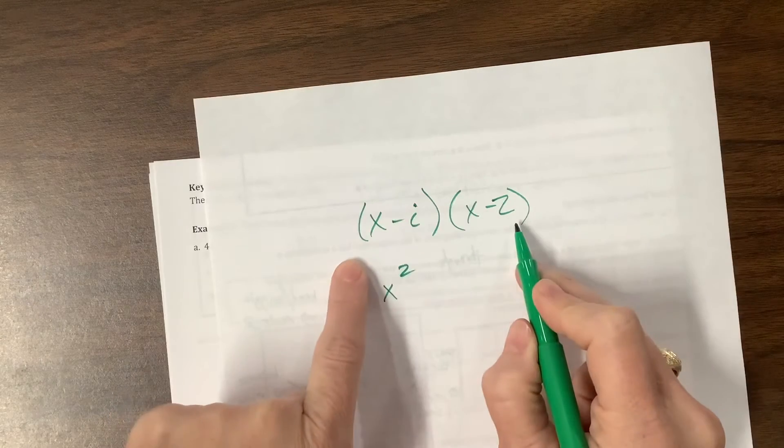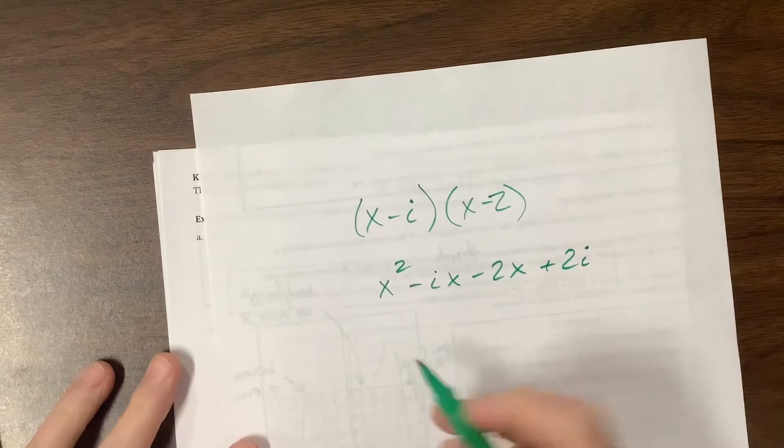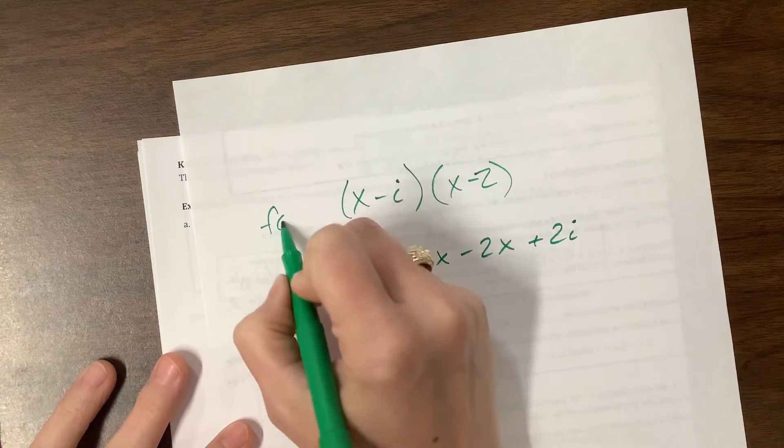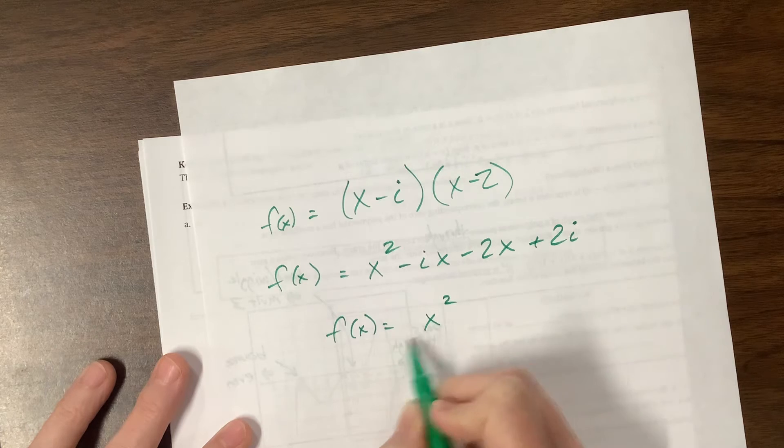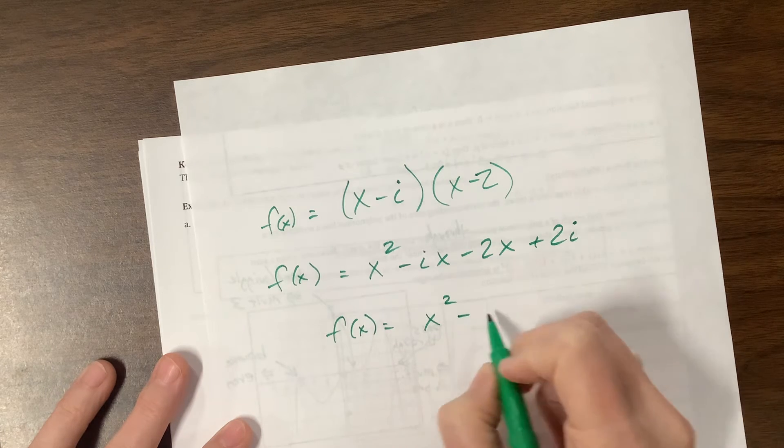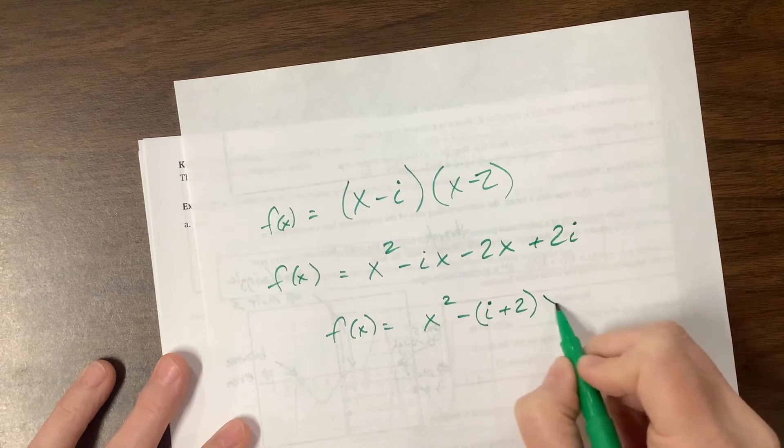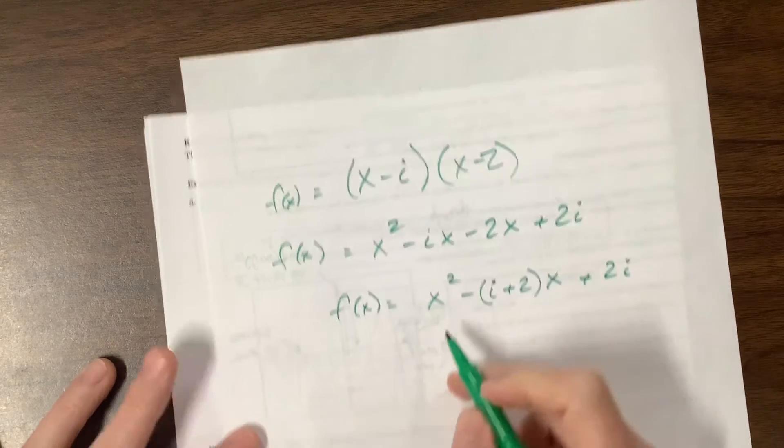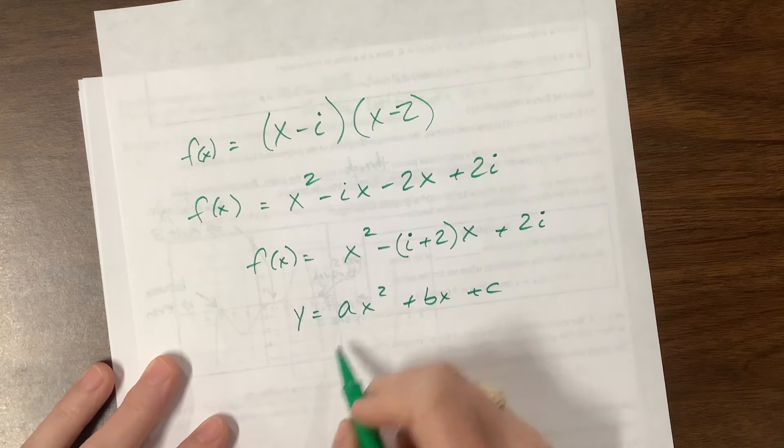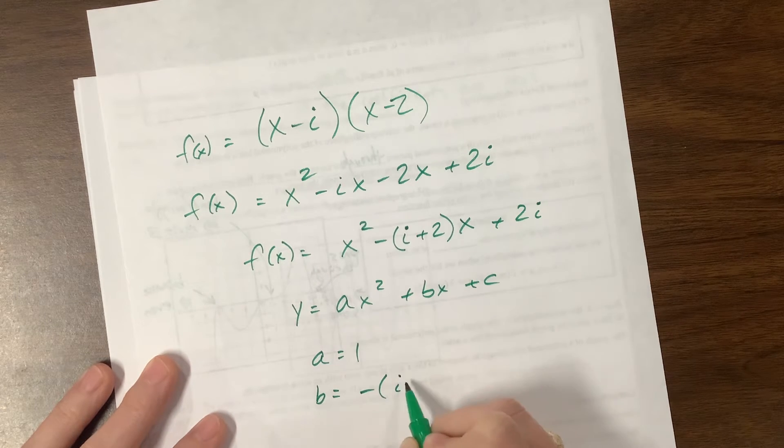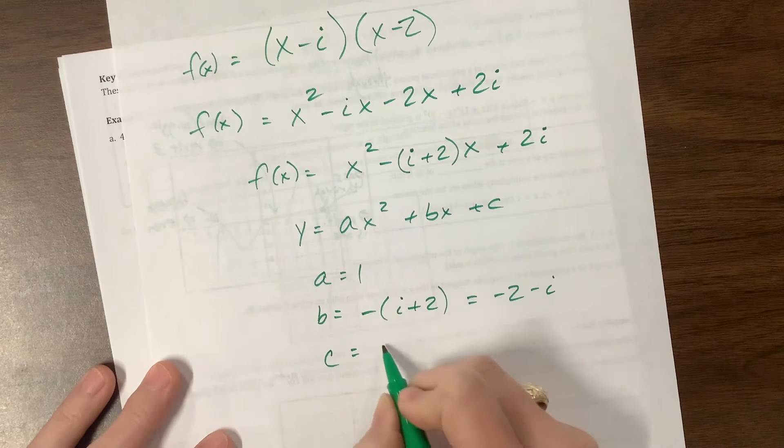I can FOIL this out and get x squared. This is a minus ix, this is a minus 2x, so it's minus ix minus 2x, and now it's plus 2i. If I write this as a quadratic, we could say f(x) is equal if it makes us feel better. My a value in front of the x squared is just 1. I can factor out the x from these two, and I might write it as negative, well, the i was negative and the 2, or you could distribute the negative through, and then plus 2i. If you were looking for your quadratic to be in the form y equals ax squared plus bx plus c, your a would equal 1, your b would equal negative i plus 2, or you could tell me that would be negative 2 minus i.